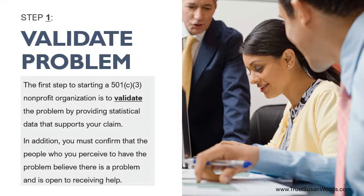The first step to starting a 501(c)(3) nonprofit organization is to validate the problem by providing statistical data that supports your claim. In addition, you must confirm that the people who you perceive to have the problem believe there is a problem and is open to receiving help.